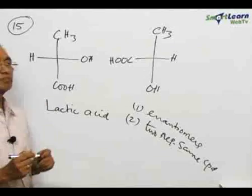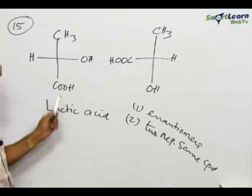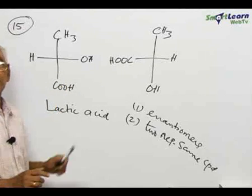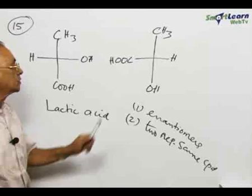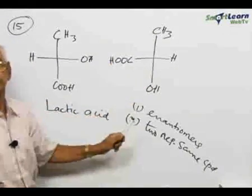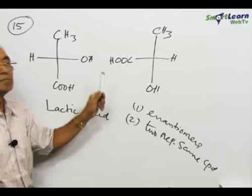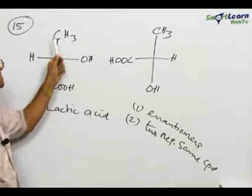How will you find out? There is an easy way of arriving at the solution. There are two structures given. Keep one structure constant, then try to convert the other structure by interchanging of the groups and make this second structure identical with the first structure.